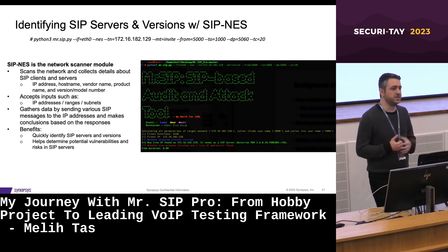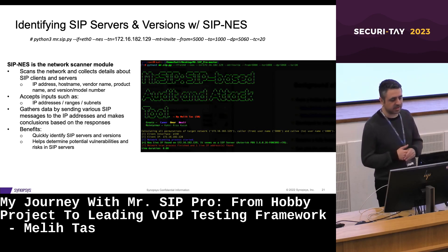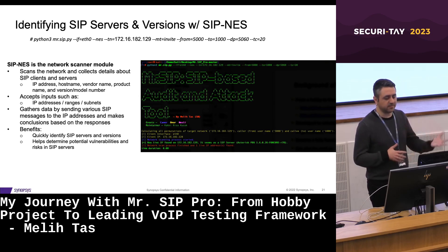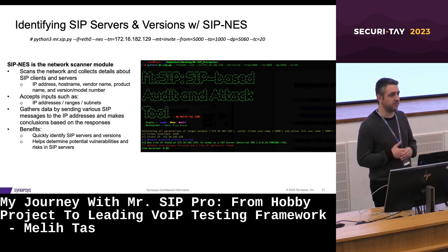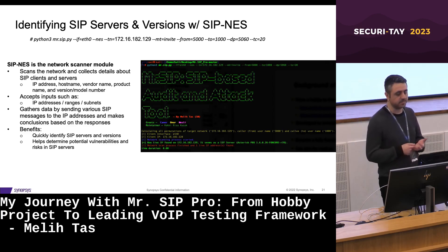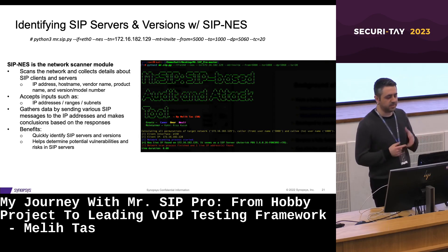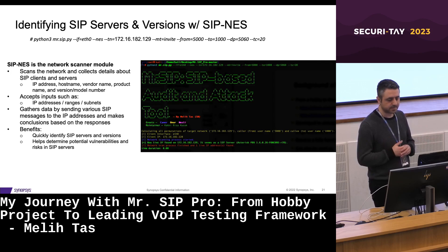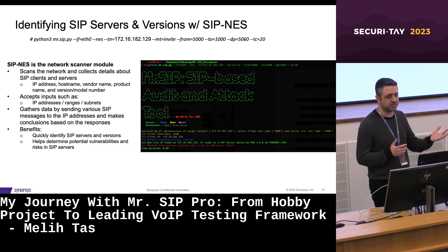The first module is SIP Ness, a network scanner used to identify SIP servers and versions. It scans the network and collects details about SIP clients and servers present on the network, including IP address, hostname, vendor name, product name, and version or model number. It accepts inputs such as an IP address, IP address range, or IP subnet, and gathers data by sending various SIP messages to IP addresses and drawing conclusions based on the responses received.